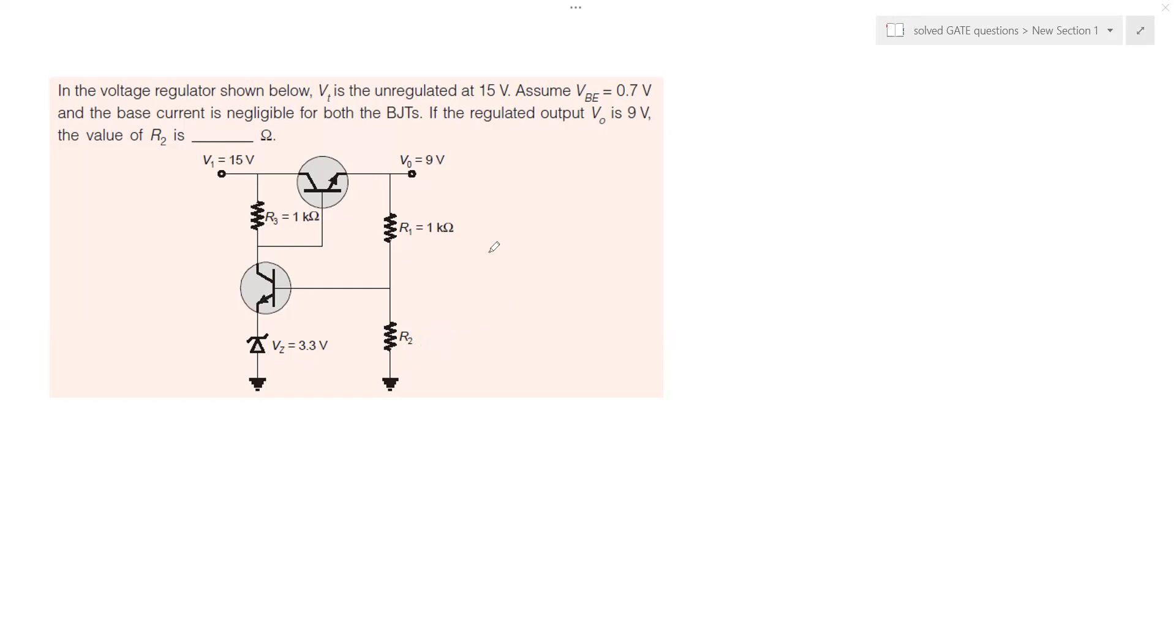What we do if we see that the Zener diode Vz is 3.3 volts. Obviously, as soon as the voltage across this diode will be greater than or equal to the breakdown voltage of this diode which is 3.3 volt, the diode will conduct the current from cathode to anode and there will be this constant voltage across it.